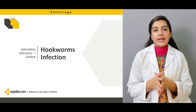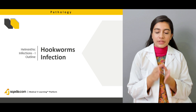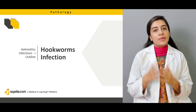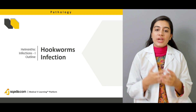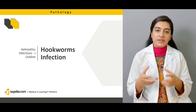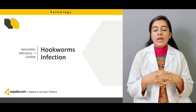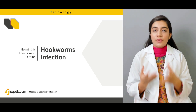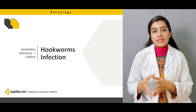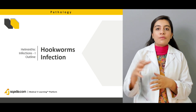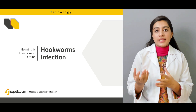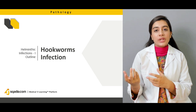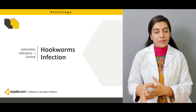Next is hookworm infection, which we have heard about commonly — it mainly infects children. We will discuss the life cycle of the worm in the pathophysiology section. In pathology and morphology, we will cover the characteristics of the worm, its size, where it is present, and how it is transmitted to human beings.